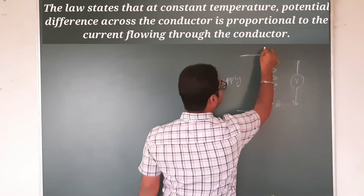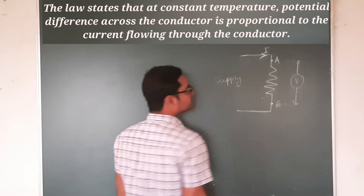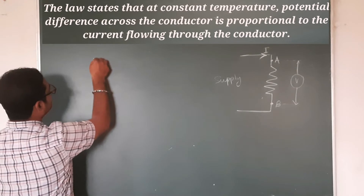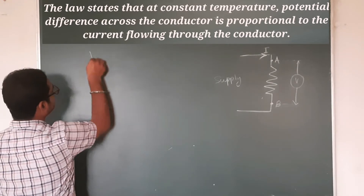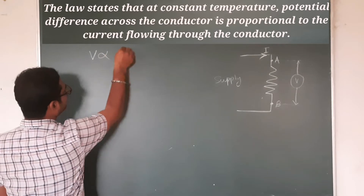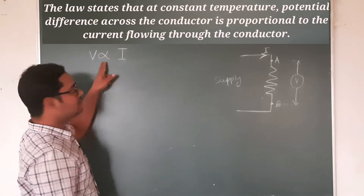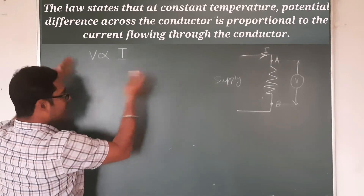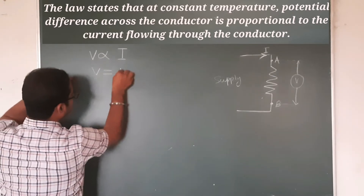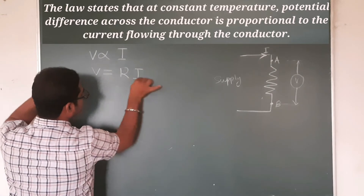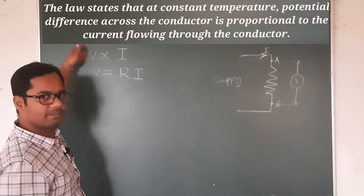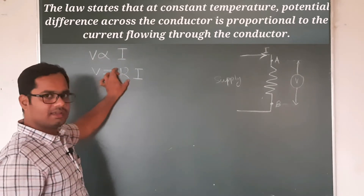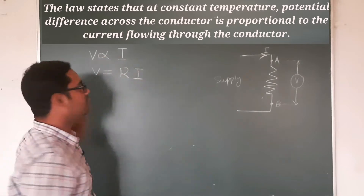The current passing through the conductor is I. Mathematically, it can be described as V is directly proportional to I, and V is equal to R times I, where V is potential difference or voltage, I is the current passing through the circuit, and R is the resistivity constant, or you can say resistance.